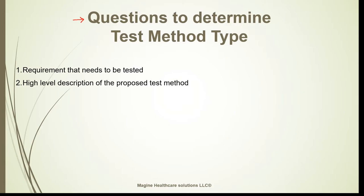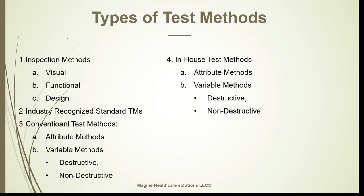If we answer these two questions we will be able to interpret the type of test methods, as shown here. Now let's look briefly at types of test methods. The first category is inspection methods, which includes visual, functional, and design.